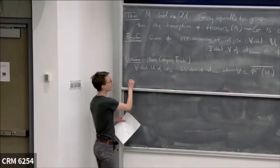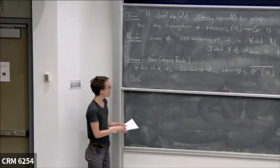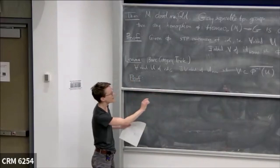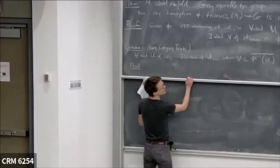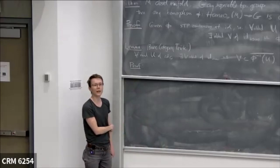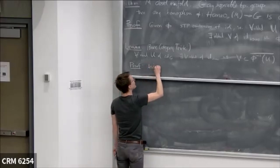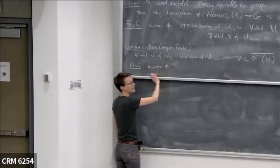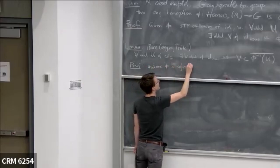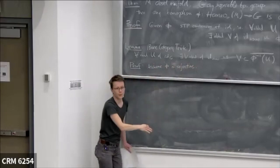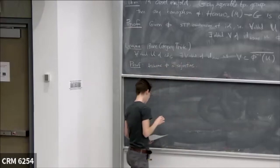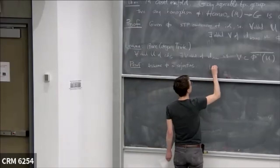Let's prove this. I'm going to make one simplifying assumption to make things go a little quicker: I'll assume that this map phi is surjective. Otherwise there's half a board of stuff you can do as an exercise. That's just my cheat — you don't really need it.